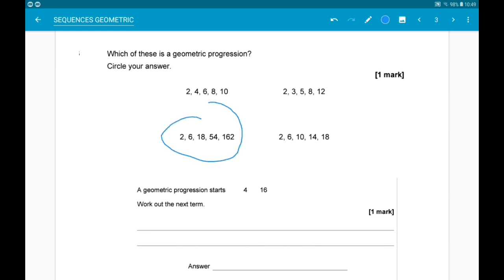And then, the last sequence there, 2, 6, 10, 14, 18, we are adding 4 each time, so that one, again, is arithmetic.